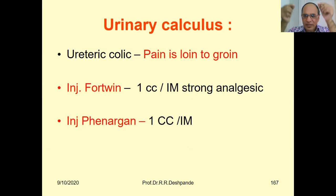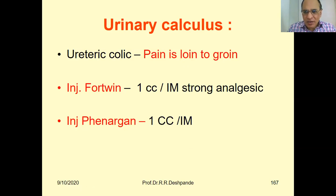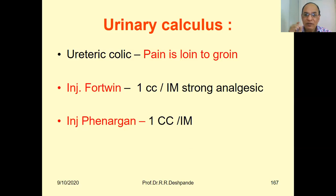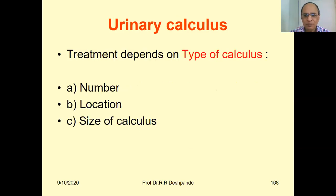In ureteric colic the stone is blocked in the ureter, causing severe pain from loin to groin — from the lumbar region to the groin, which is the medial thigh region near the genitals. This pain is more severe, so higher analgesics are given: injection Fortwin 1 cc intramuscular with injection Phenergan. However, Fortwin and Phenergan can only be used with legal permission; they are not casual drugs.